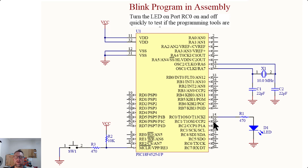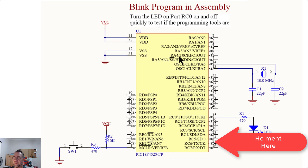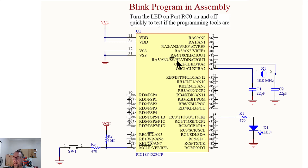Depending on the microcontroller you use, a port could be an input such as RA0, or it could be an output, or it could be something completely different like reading an analog voltage. Ports can do all different functions depending on your controller. In some cases they can be used for serial data, reference voltages for analog inputs and outputs, or for counting pulses. There's a whole range of applications, including using an output as a sine wave generator if you've got a digital-to-analog converter.